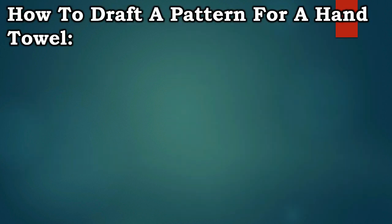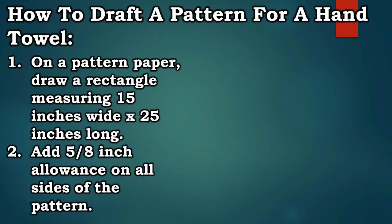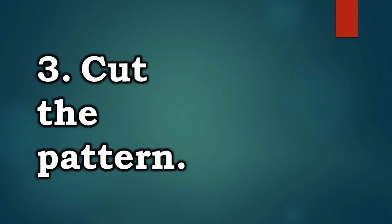How to draft a pattern for a hand towel: Step 1. On a pattern paper, draw a rectangle measuring 15 inches wide by 25 inches long. Step 2. Add 5/8 inch allowance on all sides of the pattern. Step 3. Cut the pattern.